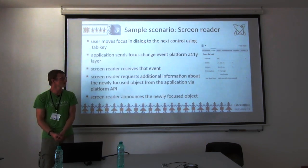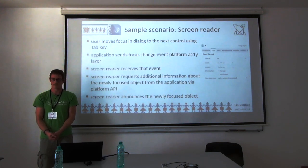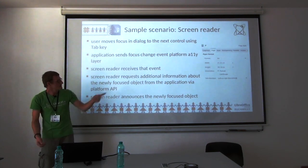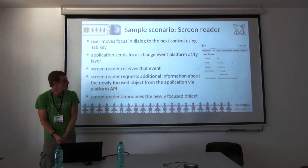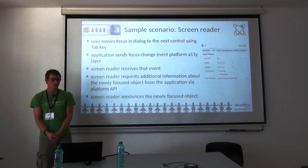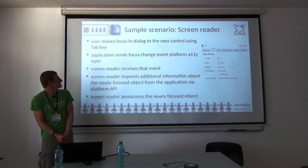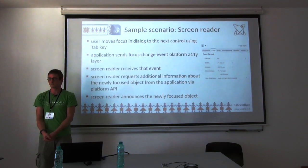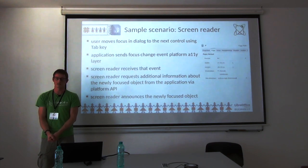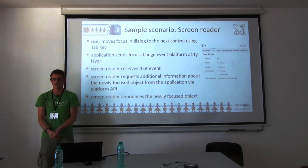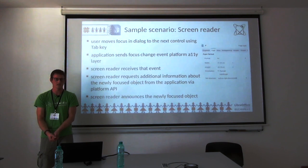Let's start with a sample scenario of a screen reader — a tool for people who can't see or don't see well what's on screen. For example, in the page style dialogue in Writer with several UI controls, a user might move focus to the format list box showing A4. The application sends an event to the accessibility layer, received by the screen reader, which retrieves more information to announce the element — that it's a list box for paper format.